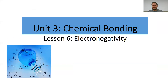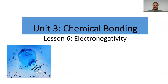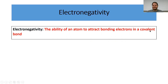With lesson six, we are going to dive a little bit more into covalent bonding with electronegativity, but electronegativity as an even broader aspect than just focusing on covalent bonding. It will also help us to understand ionic bonding and metallic bonding a little bit later on. So for now, we're going to use electronegativity to focus more or less on covalent bonding aspects.